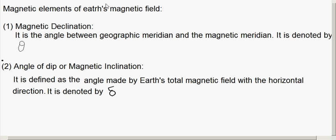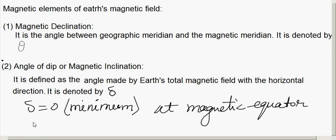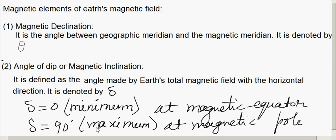At the magnetic equator of Earth, the angle of dip delta is 0 degrees (minimum). At the magnetic poles of Earth, delta is maximum, equal to 90 degrees. So delta is minimum at the magnetic equator and maximum at the magnetic poles.